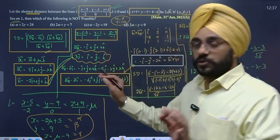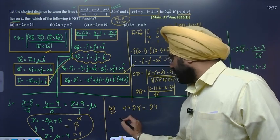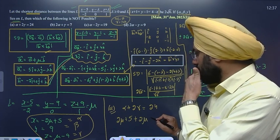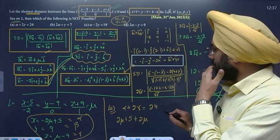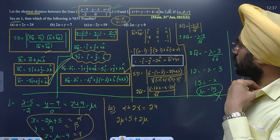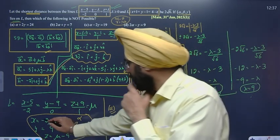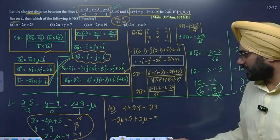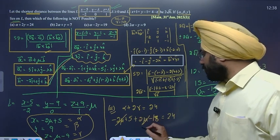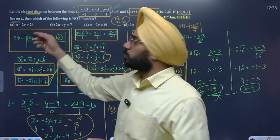Now we put these values into the options one by one. For option A, alpha plus 2 gamma by 24: substituting gives (minus 2 mu plus 5) plus 2(mu minus 9) divided by 24. This simplifies to minus 2 mu plus 5 plus 2 mu minus 18, and the 2 mu cancels, leaving 5 minus 18 = minus 13. Since minus 13 does not equal 24, option A is not possible.